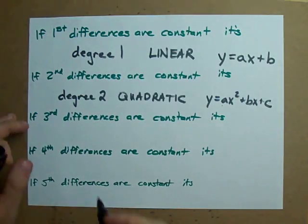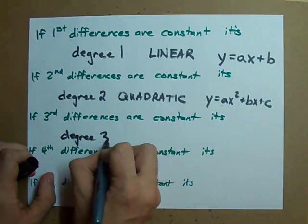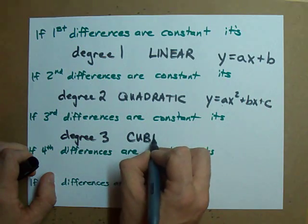y equals ax cubed, and you may have an x squared and an x and a constant at the end.